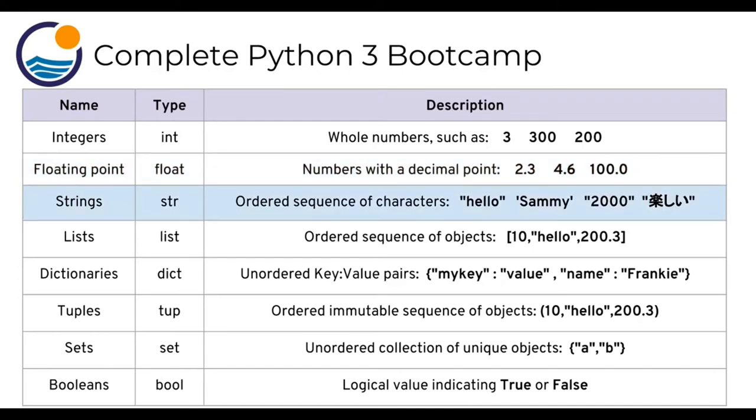Then we have strings and strings are an ordered sequence of characters. You can think of these as words, but you should also note they can be numbers as well as foreign characters inside of a string. The main thing that denotes a string is that it either has double quotes or single quotes.